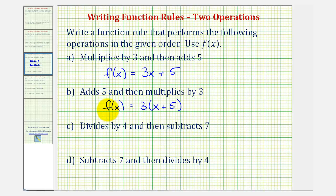So following the order of operations, we would add five to x first and then multiply by three.